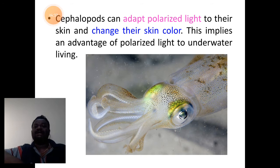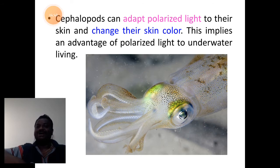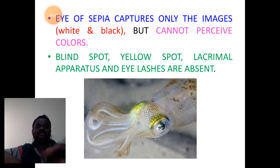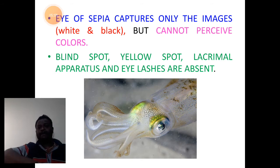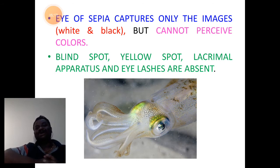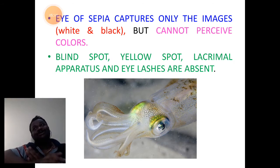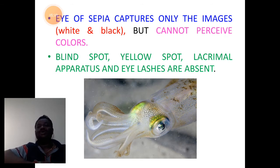They adapt to polarized light, which helps the animal to change its skin color — a kind of mimicry — so that the organism can easily escape from enemies and predators. The kind of image that cephalopods form in their brain is generally black and white, a colorless kind of image. They cannot perceive colors because cones are absent. Cones are associated with the perception of colors, which is totally absent in them.